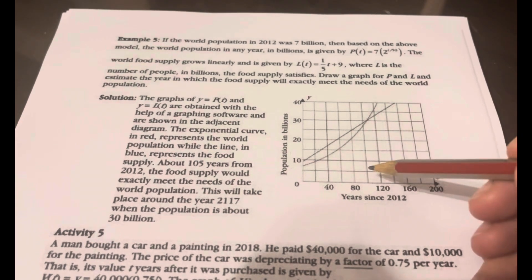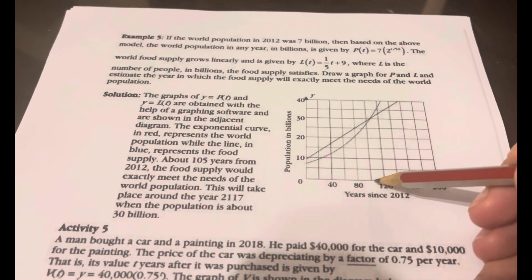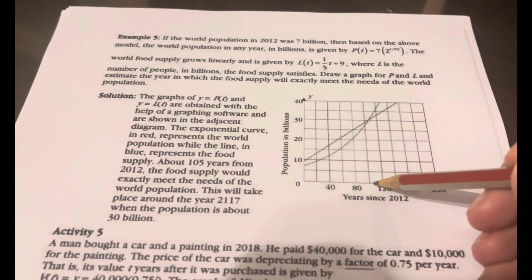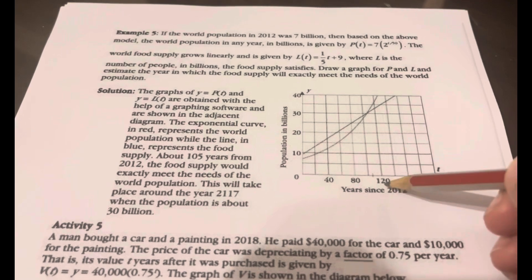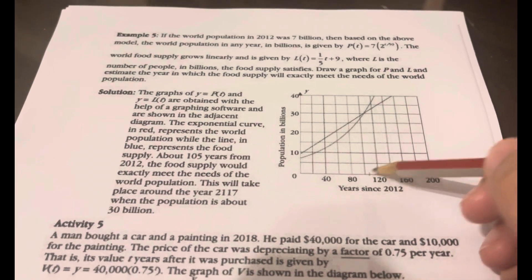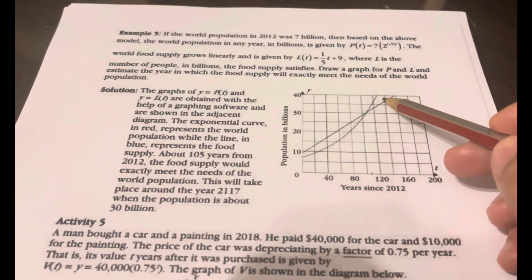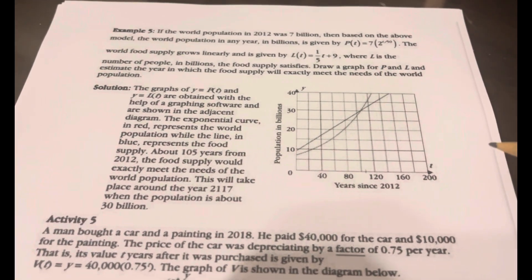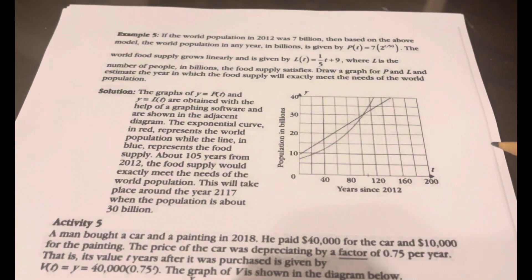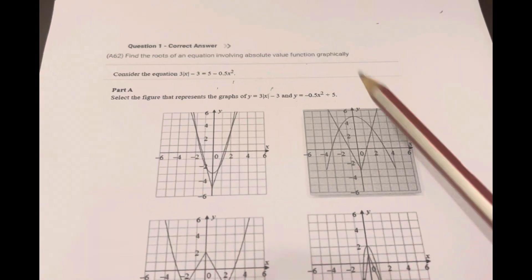Or in terms of years, maybe after 105 years you will start having a problem where your food production is less than the population. So from that point, you start having a problem.